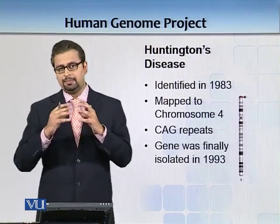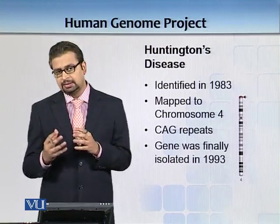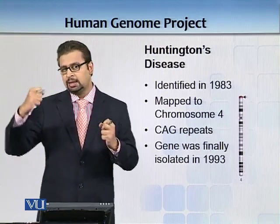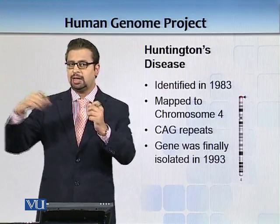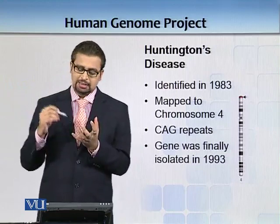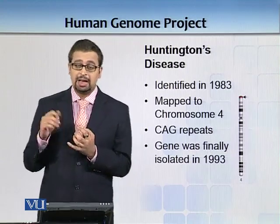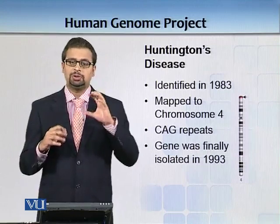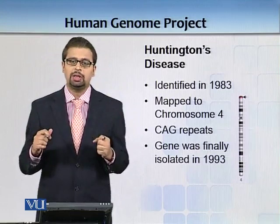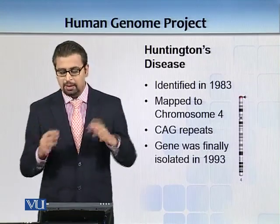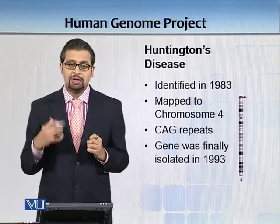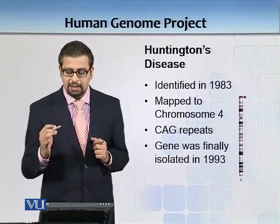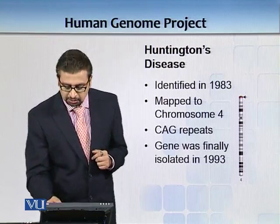In the brain you have neurons, and what happens in Huntington's disease is that there are neurofibrillary tangles. The Huntington's protein has a long stretch of CAG repeats and starts to entangle, accumulating inside as well as outside the cell body. This causes problems for Huntington's disease patients. The gene for this disease was finally isolated in 1993 — it took 10 years from identification to isolation of the gene.